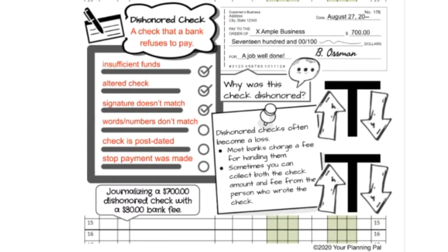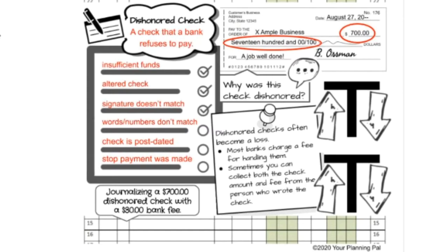Looking at the example check, it was dishonored because the numbers and the words don't match — $700 versus $1,700. The bank would not honor it because they wouldn't know which amount was intended. Dishonored checks often become a loss. Most banks charge a fee for handling them, and sometimes you can collect both the check amount and the fee from the person who wrote it, but oftentimes it just becomes a loss. We need to think about which accounts are affected when journalizing a dishonored check.